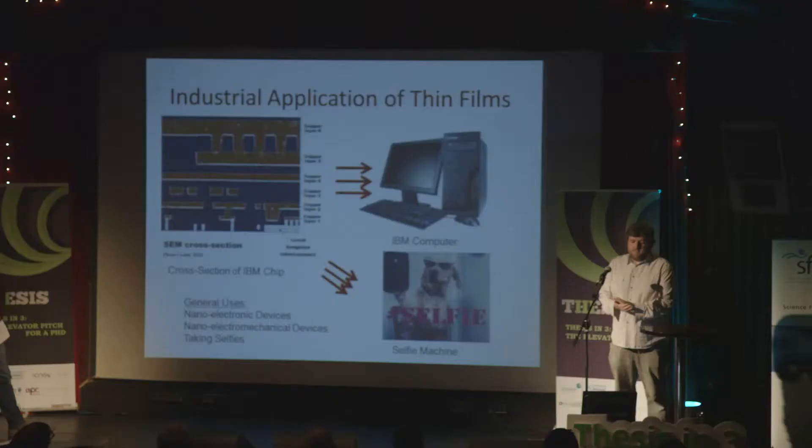These thin films have found themselves into our everyday lives. An example, top left, there's a cross-section of a processing chip used by IBM and labeled there you've got copper layers all the way from top to bottom — these are the thin films I'm talking about. Essentially they're the wiring within these micro devices; without this wiring these won't work.